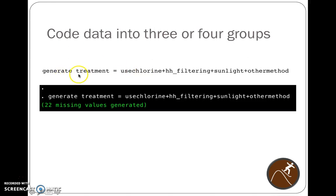So we had to generate this new variable called treatment. What we did was, since the data were coded as one or zero, if you use chlorine, that's one, if you don't, that's zero, we added these up. So the use chlorine value plus the household filtering value plus the sunlight value, if they use UV light from the sky to disinfect water, or if they use another method like boiling.